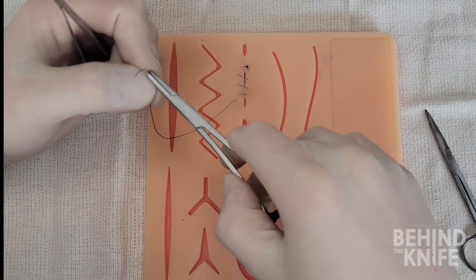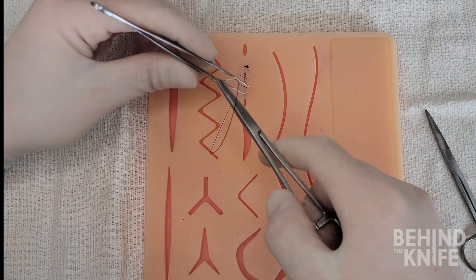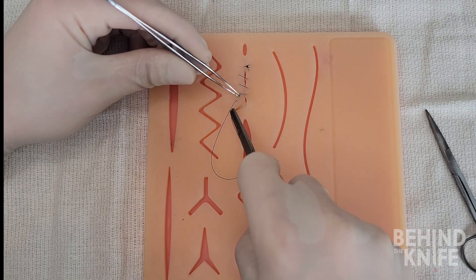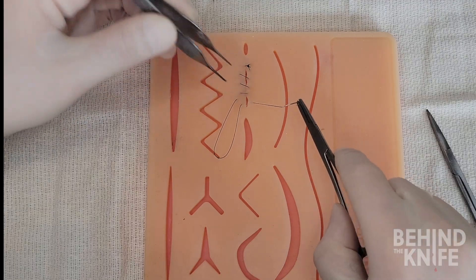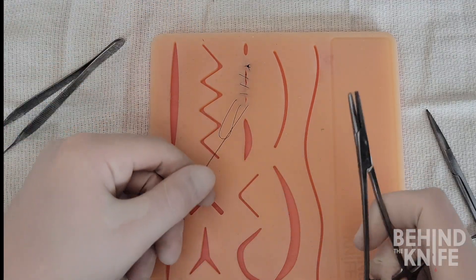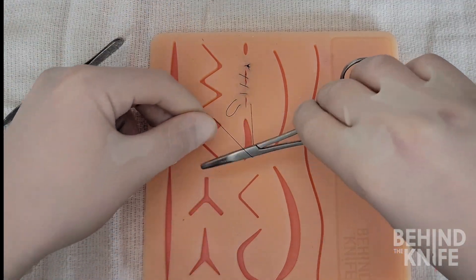For the final throw at the bottom of the wound we'll perform a backhanded simple interrupted throw. Instead of pulling the suture completely through as we've done previously we will leave a loop of suture material on the side of the incision opposite of the needle.